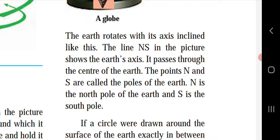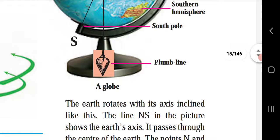After performing the rotation experiment with the plumb line held close to the globe, you can see that the plumb line and the earth's axis — the North and South Pole — are at an angle. One end of the axis is called the North Pole and the opposite end is called the South Pole. The line joining the North and South Pole is the axis of the earth.